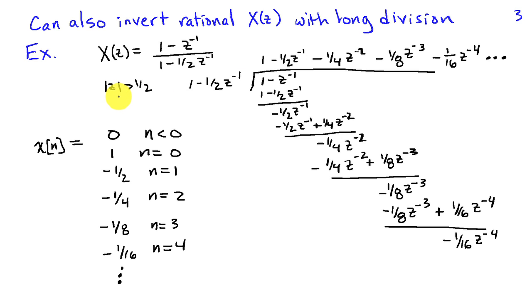In this case, we know from the region of convergence that the right-sided inverse transform is the appropriate one. So we're going to expand our long division using powers of Z inverse.